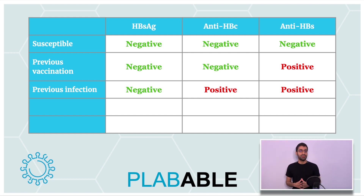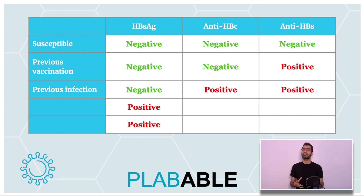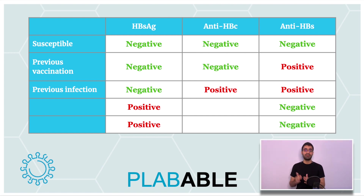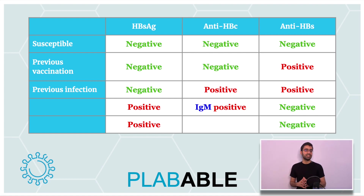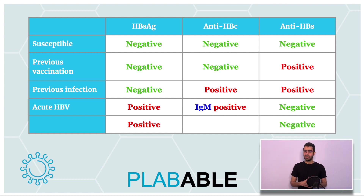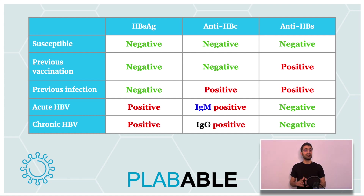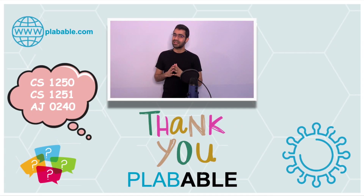In the fourth and fifth rows, HBsAg is positive, meaning the person is currently infected. Anti-HBs is negative in both rows, indicating an ongoing infection with no immunity or recovery yet attained. In the fourth row, IgM anti-HBc is positive, which signifies an acute infection. In the fifth row, IgG anti-HBc is positive, which signifies a chronic infection.